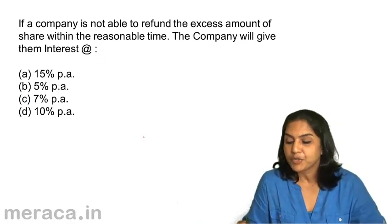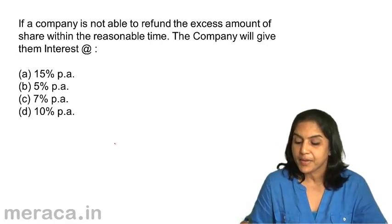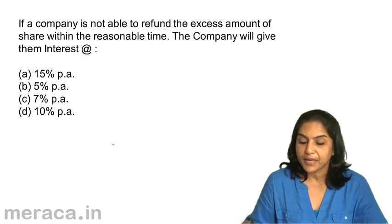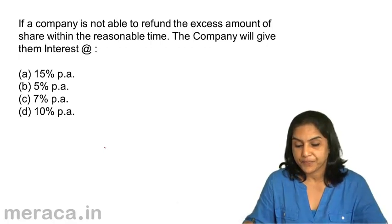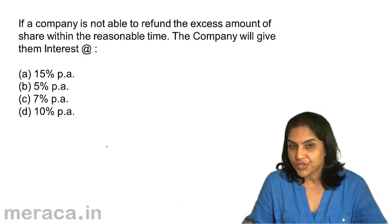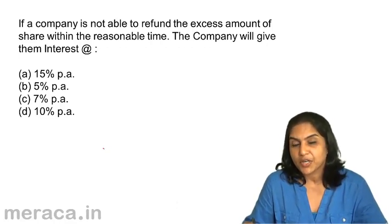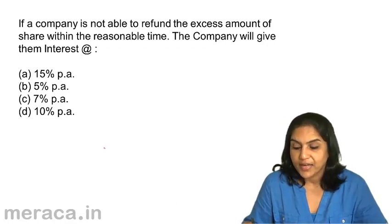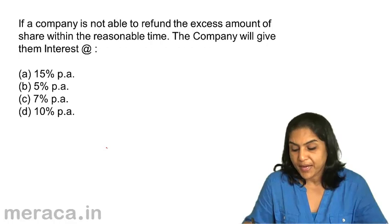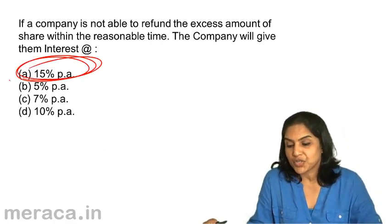If a company is not able to refund the excess amount of shares within a reasonable time, the company will pay interest at the rate of: A) 15%, B) 5%, C) 7%, D) 10%. If the company has received excess money over and above what can be adjusted against allotment or held in calls in advance, then the interest to be paid is at the rate of 15% per annum. The correct answer is A.